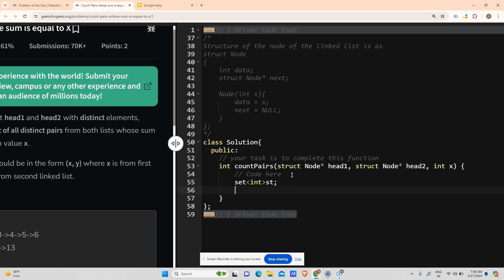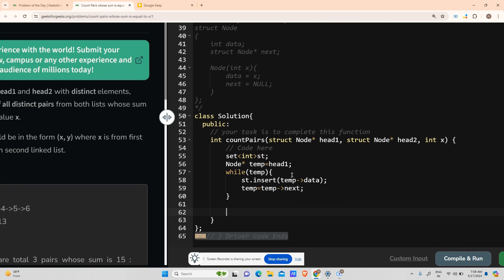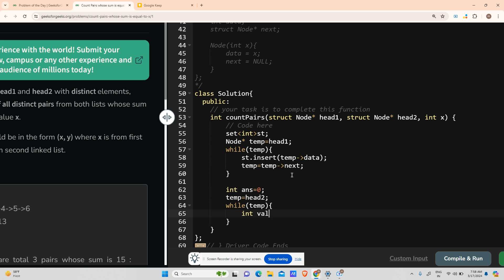Now I will create a node temp to traverse the first linked list to store the elements into the set. Now while temp, simple traversal, what I will do is st.insert(temp->data), temp will become equals to temp->next. This will store all the elements of the first linked list into my set. Now int answer, my answer will be 0. I will make my temp equals to head2 for the traversal of head2 linked list. Now while temp, my value is equal to temp->data.